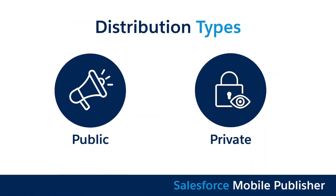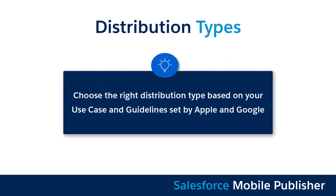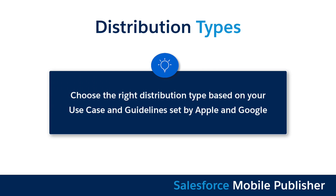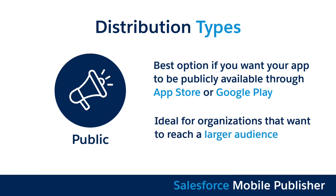After choosing the distribution method, you'll need to consider the distribution type. You can choose between public or private distribution types. Before publishing your app, you need to choose the right distribution type based on your use case and the guidelines set by Apple and Google. Public distribution is the best option if you want your app to be publicly available through the App Store or Google Play, and it's ideal for organizations that want to reach a larger audience.